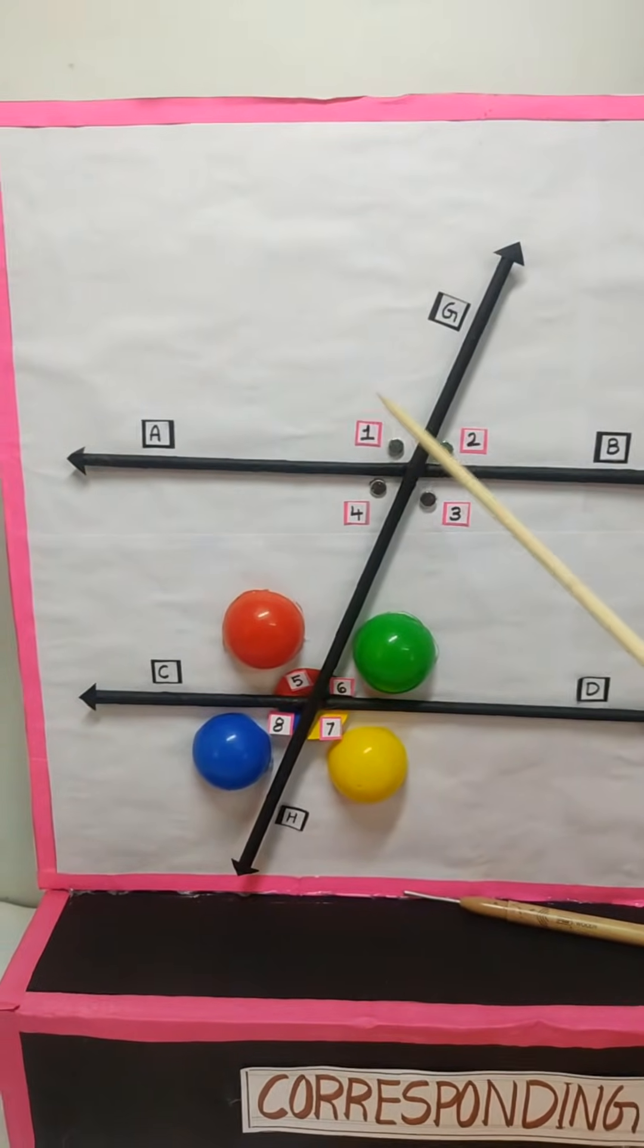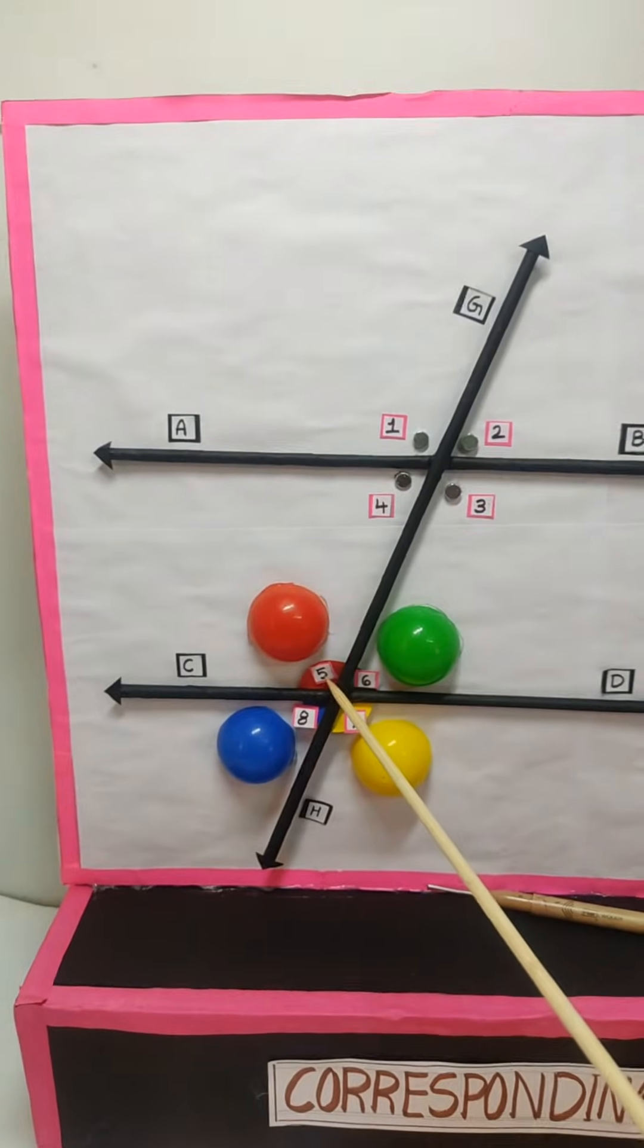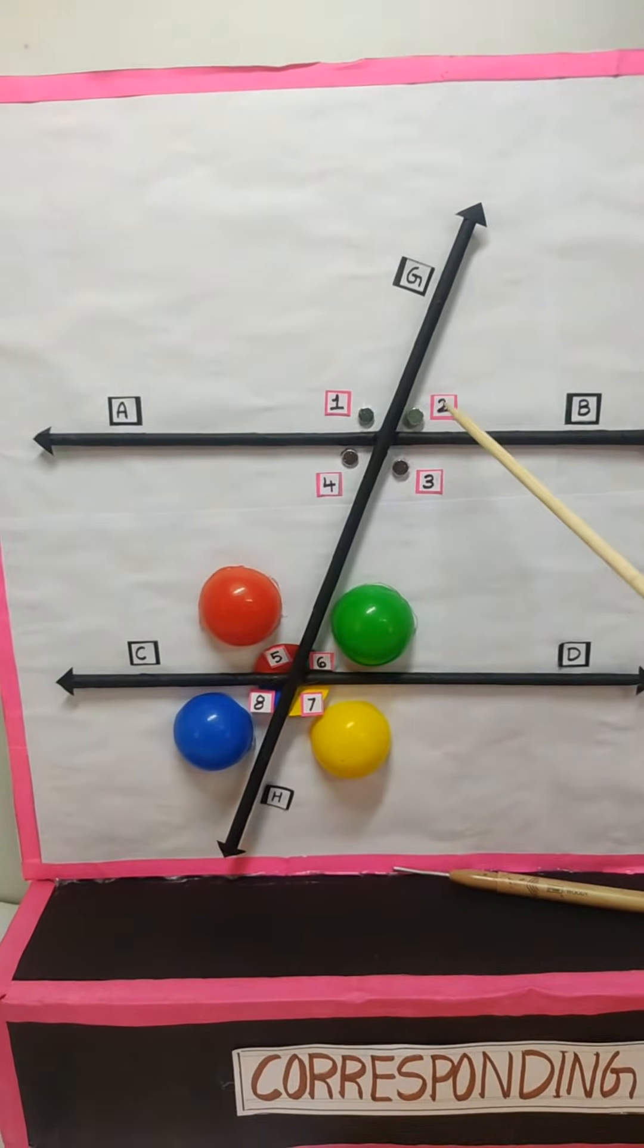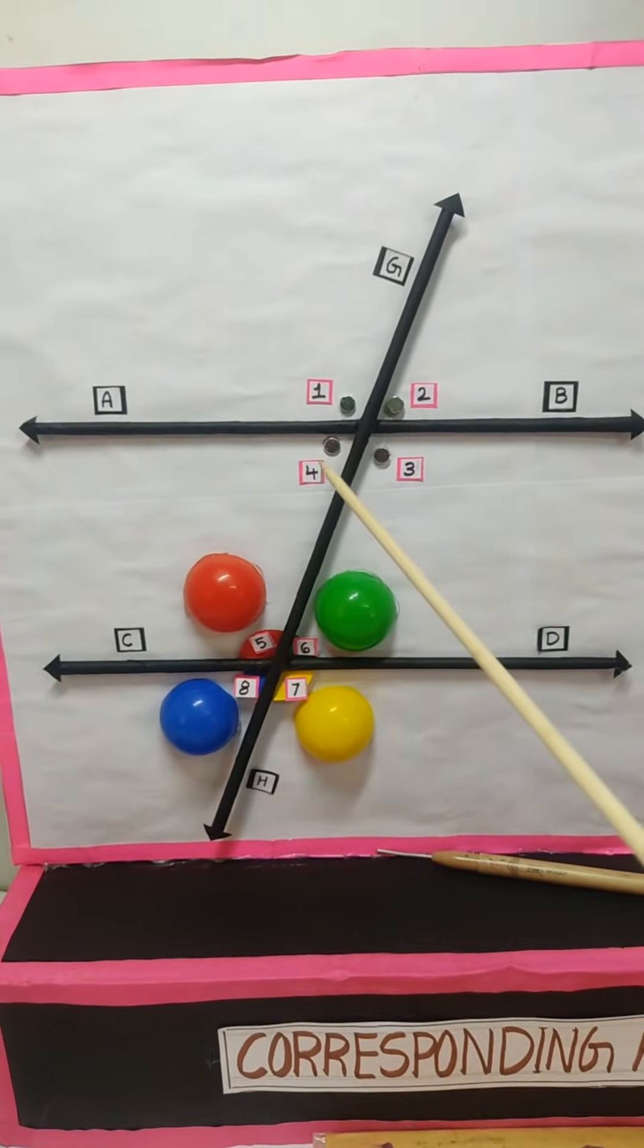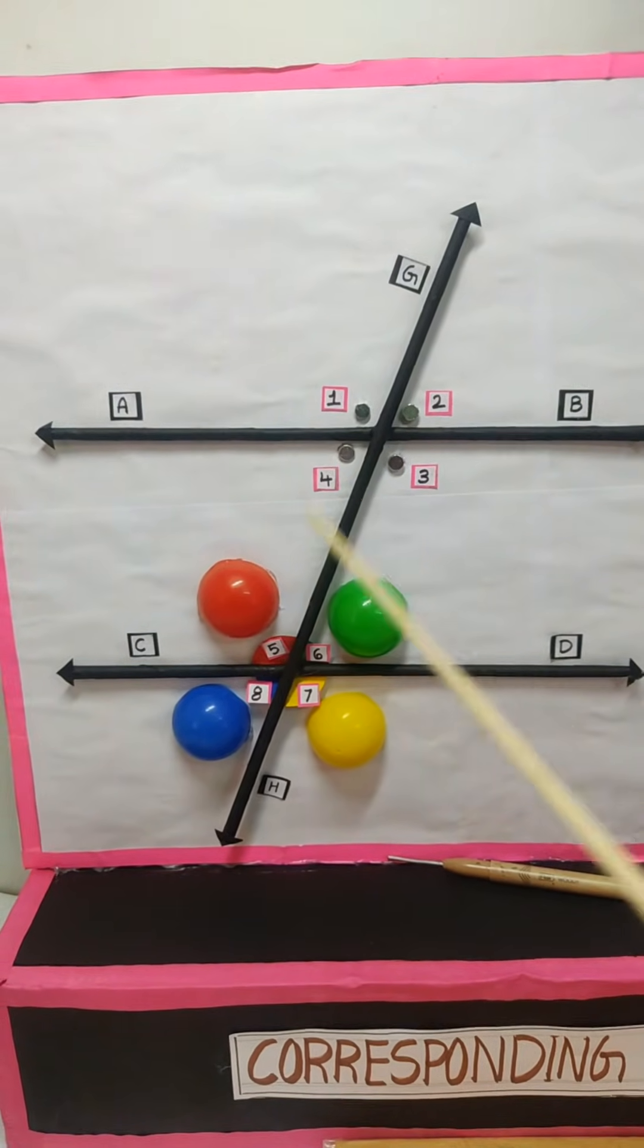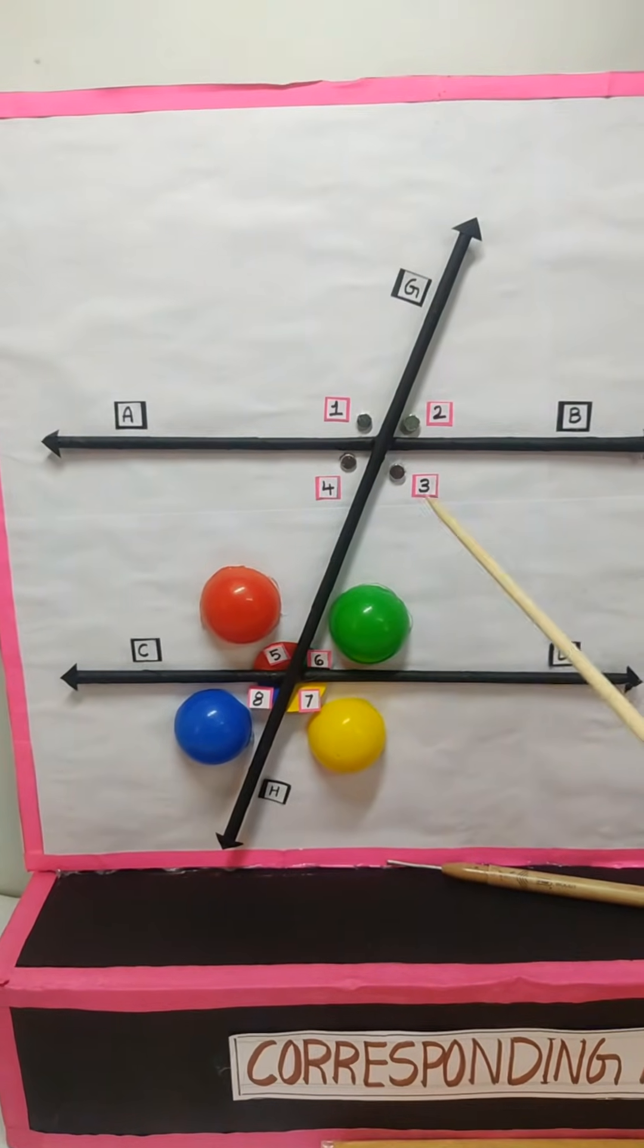If you can see, this number one angle would remain this angle which is five. And two angle is similar to eight, and four angle is similar to eight. And two angle similar to six, and three angle parallel to this seven.